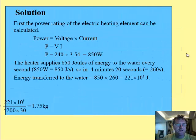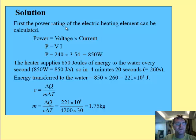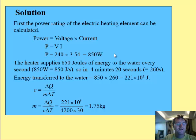So the solution here: first of all the power rating means that the voltage times current is going to give me 850 watts, 850 joules per second. Over 4 minutes and 20 seconds — that's 260 seconds — that means that the energy transferred in is going to be 221 times 10 to the 3 joules.